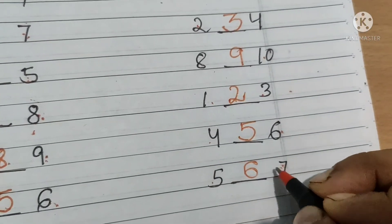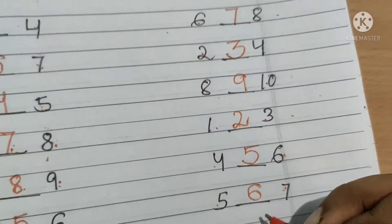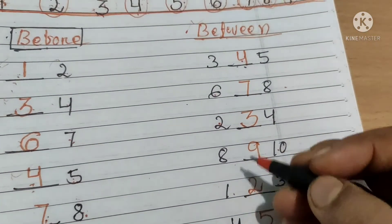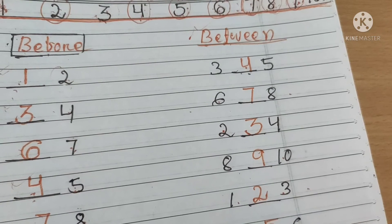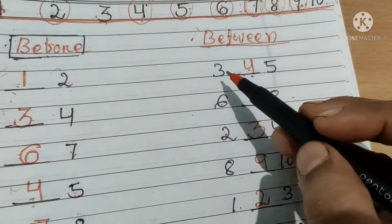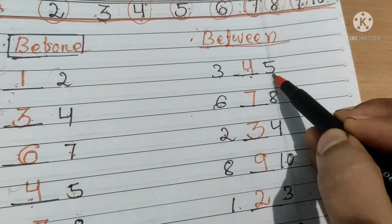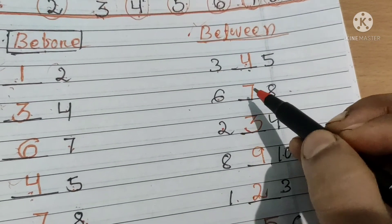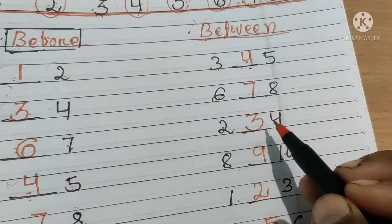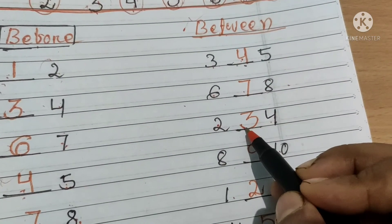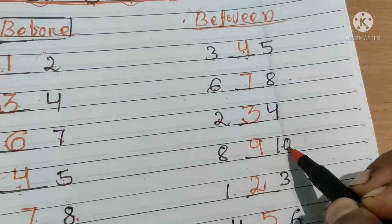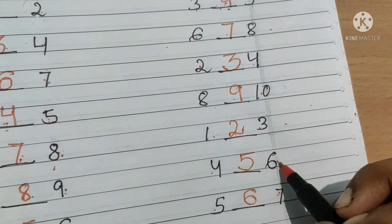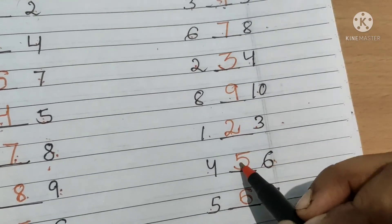Five and seven ke beech mein number six aata hai. Isse kehte hain between number. Abhi jo haom sare kiye usse kahenge between number. Again I am going to repeat: three and five ke beech mein number four aata hai, six and eight ke beech mein seven aata hai, two and four ke beech mein number three aata hai, eight and ten ke beech mein nine aata hai, one and three ke beech mein two aata hai, four and six ke beech mein number five aata hai.